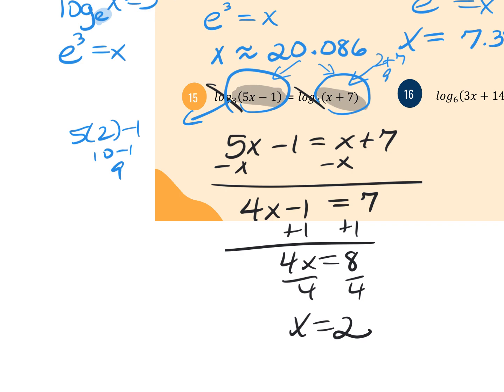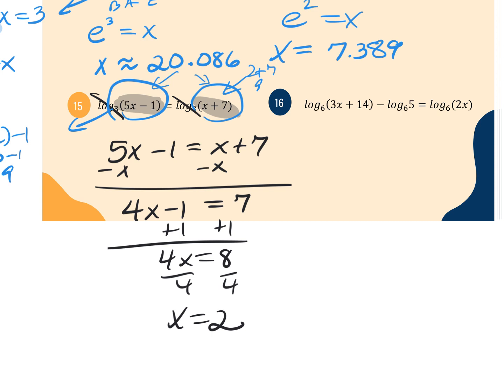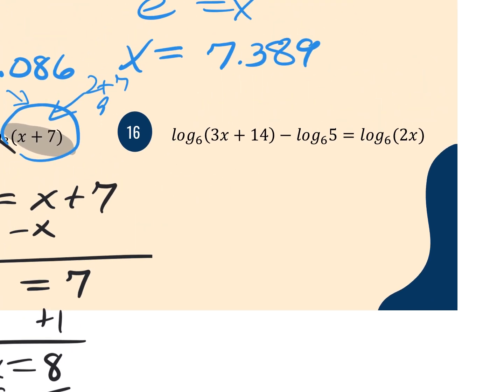Example 16 has multiple logs on one side, so I can't just cancel them. I need to condense using properties. Since it's a subtraction, I'll use the quotient property: log base 6 of the first expression as the numerator and the second as the denominator. Now it equals log base 6 of 2X. With a single log base 6 on each side, I can apply the one-to-one property.